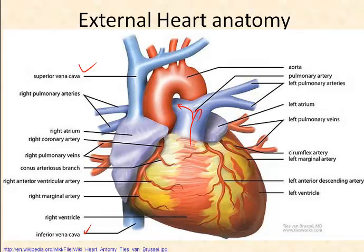The blood is oxygenated there, and it returns to the heart — this time to the left side of the heart — via the pulmonary veins from each of the lungs. Then it travels through the heart and up into the aorta, which is the largest artery in the body. It branches many many times, and its job is to deliver oxygenated blood to the body.